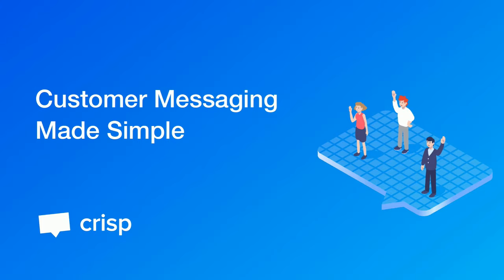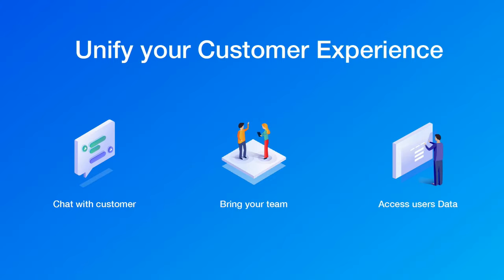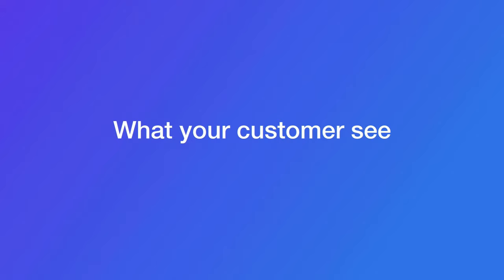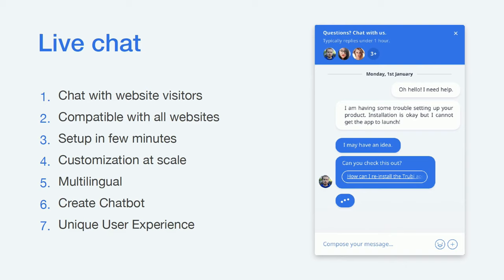CRISP is a customer messaging platform that helps you make customer messaging simpler. Quickly put, CRISP helps you chat with customers, bring your team together, and access user data. There will be two kinds of presentation today: first, what your customers see — the main features and how they can chat with you — and then what your teams can enjoy while using CRISP. If you have any questions, feel free to write them down in the Livestorm interface.